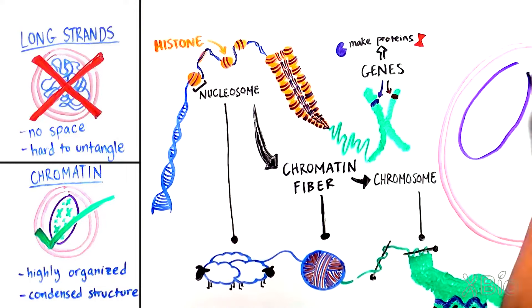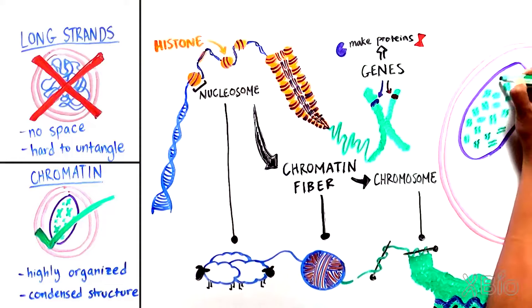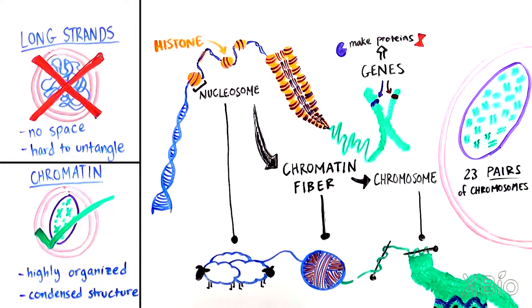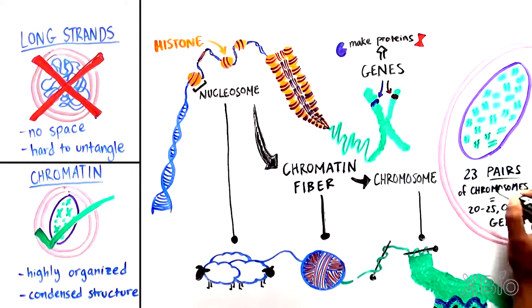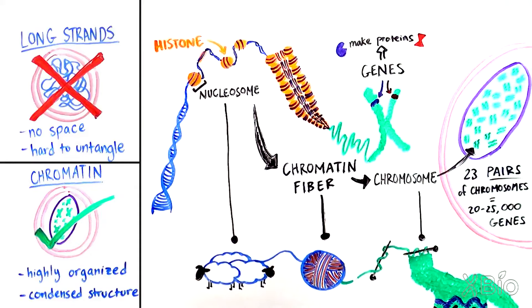Each human cell has 23 pairs of chromosomes, or 46 total, which contain approximately 20,000 to 25,000 genes, all of which live inside the cell's nucleus.